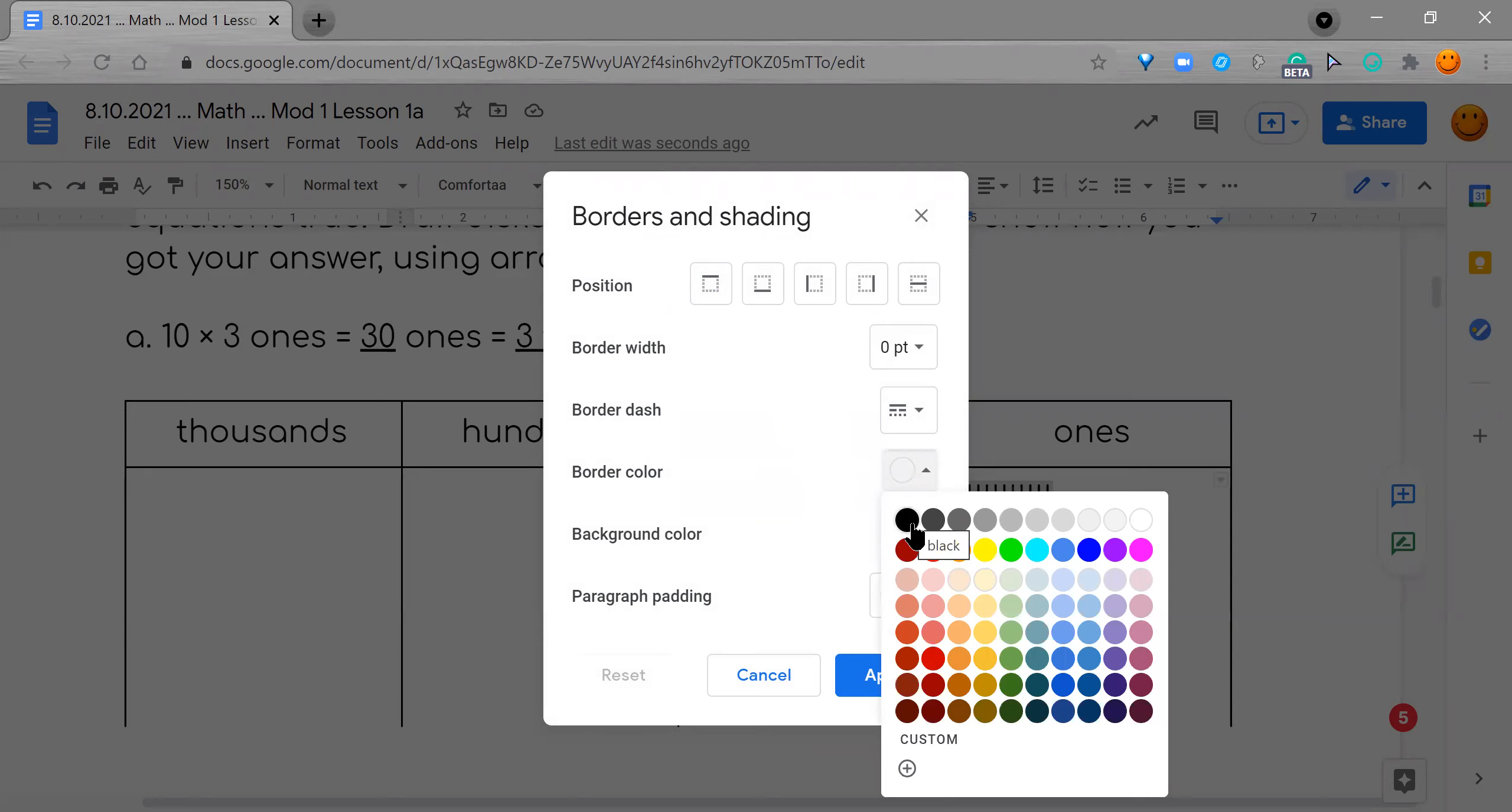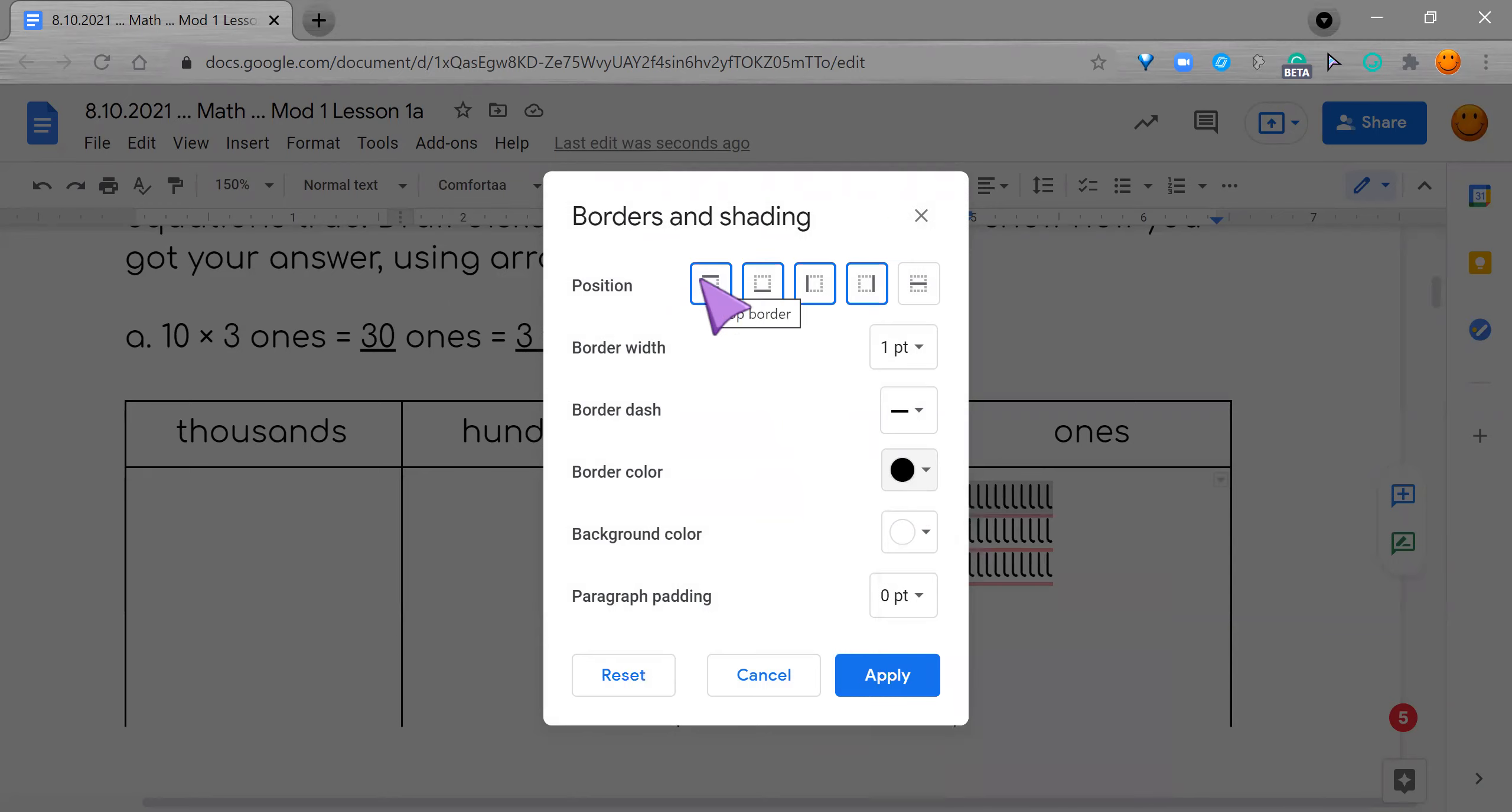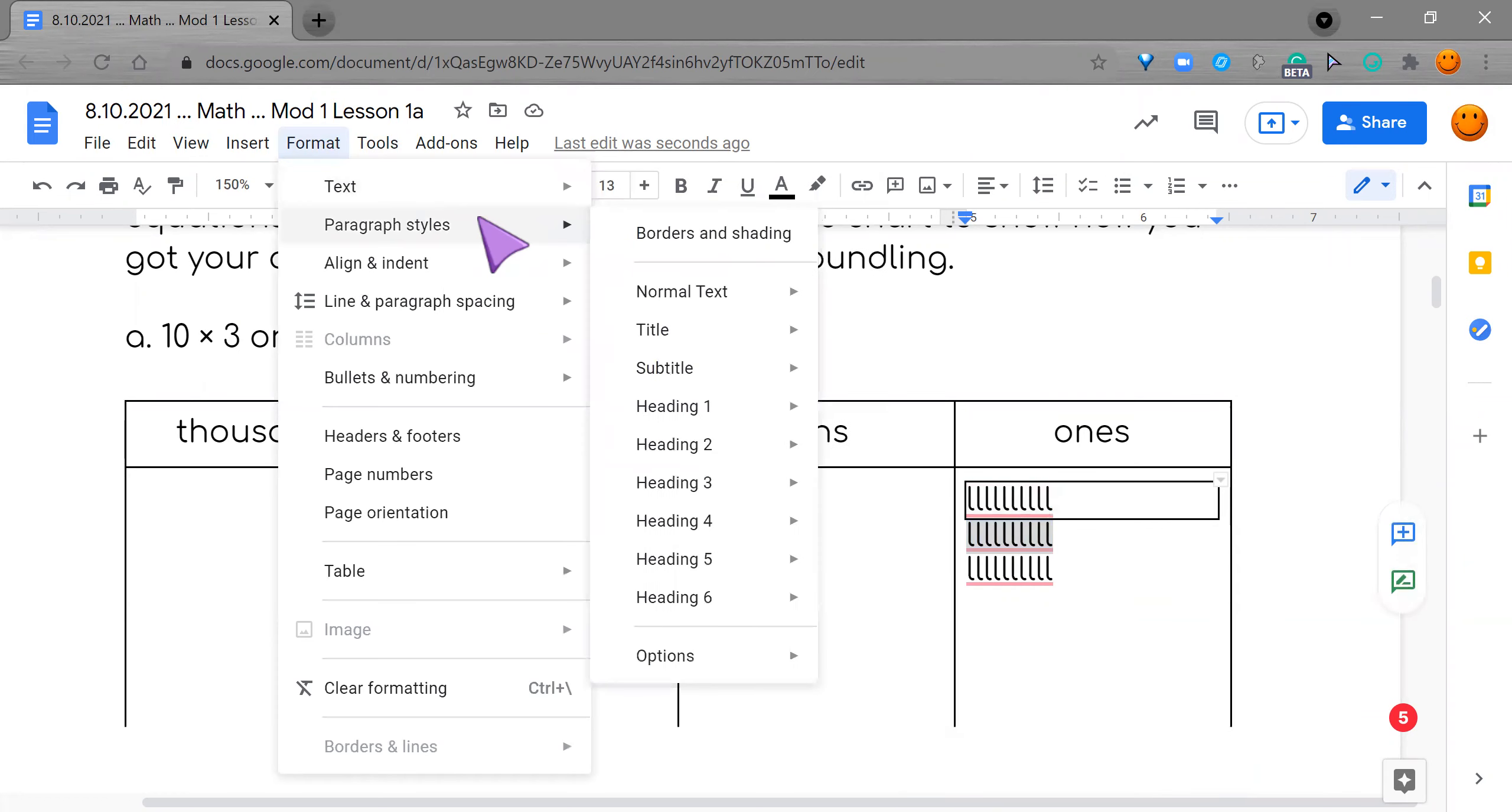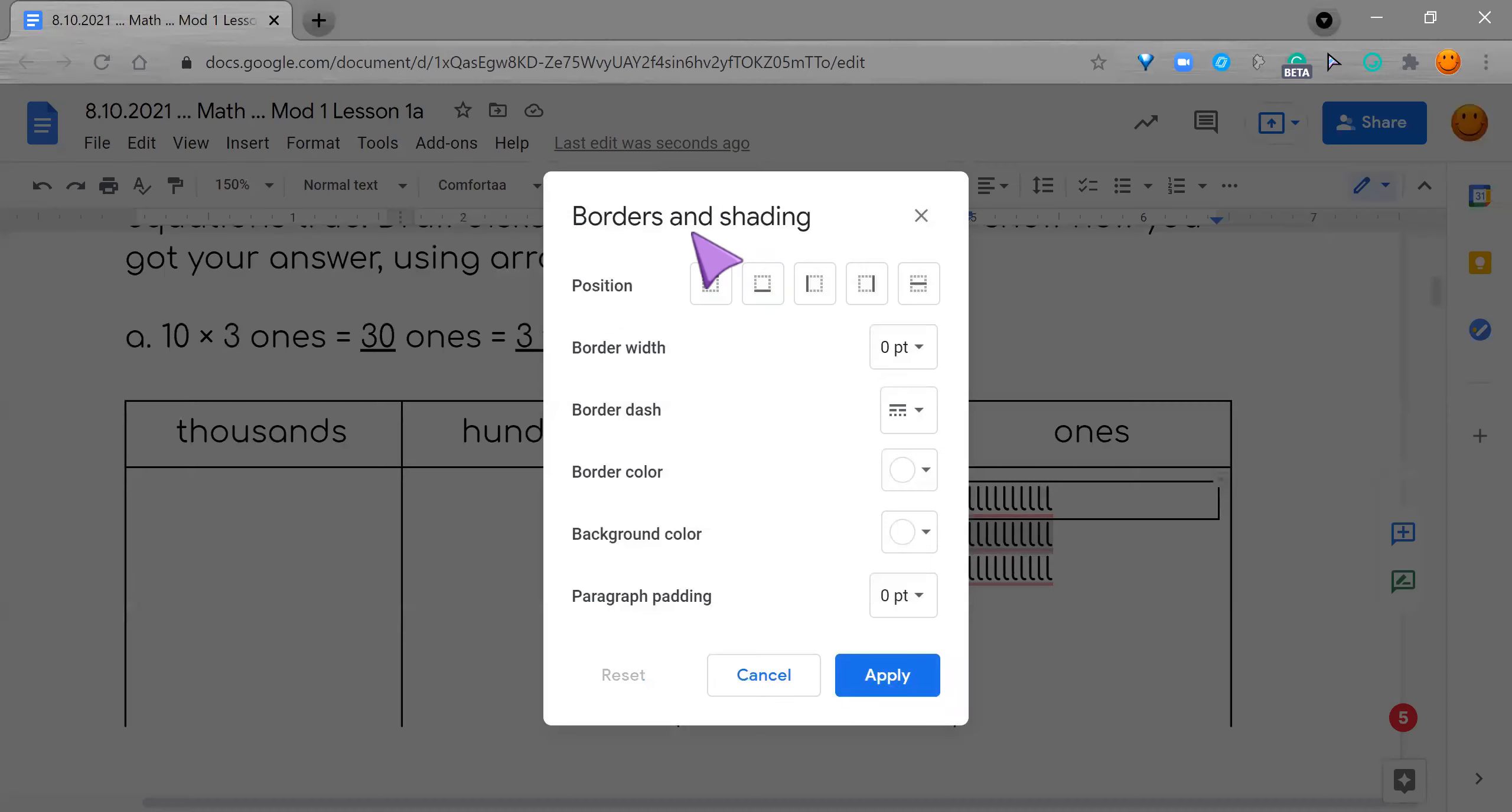We're just going to do it as black. And we want all of them. See that we're going to do it all again. So it's format paragraph styles, hit borders and shadings, and then pick border.